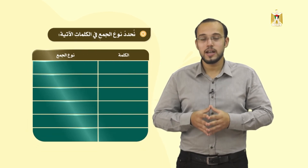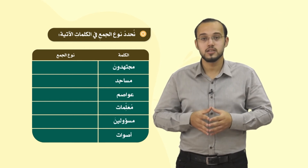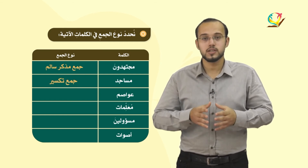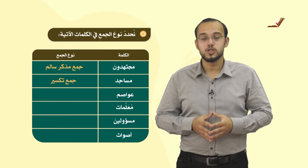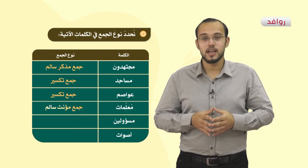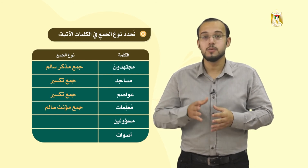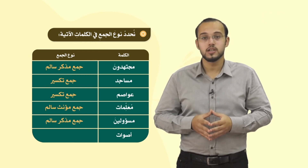نجيب الآن عن أسئلة تطبيقية على الدرس. السؤال الأول: نحدد نوع الجمع في الكلمات الآتية. مجتهدون؟ أحسنت، جمع مذكر سالم. مساجد؟ ممتاز، جمع تكسير. عواصم؟ رائع، جمع تكسير. معلمات؟ مميز، جمع مؤنث سالم. مسؤولين؟ أصبت، جمع مذكر سالم. أصوات؟ مبدع، جمع تكسير.